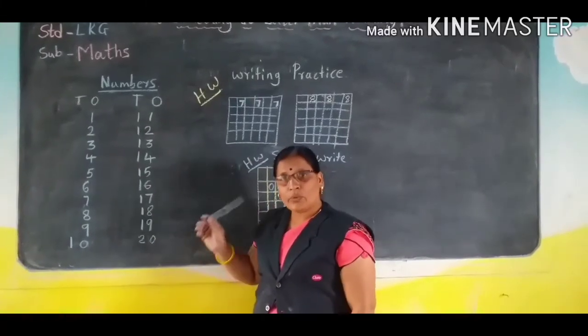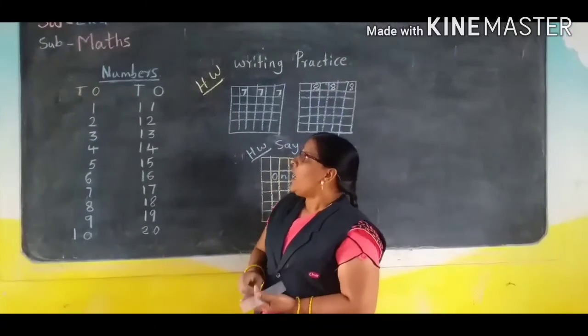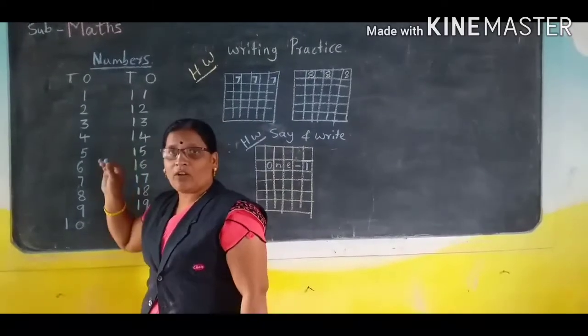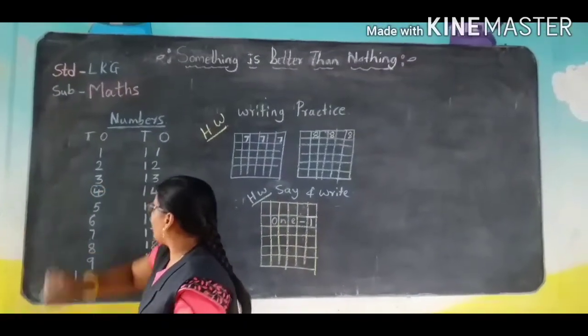Next step, you read and practice the number. How much you remember? You recognize the number and circle on that number. See here, what is this number children?